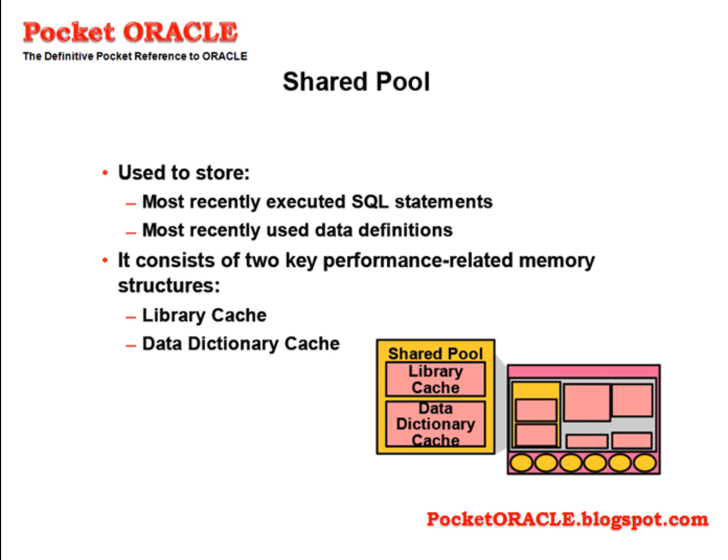The shared pool is further subdivided into a number of other structures: the library cache and the data dictionary cache. The library cache is a memory area for storing recently executed code in its parsed form. Parsing is the conversion of code written by programmers into something executable, and it is a slow process that Oracle does on demand. By caching parsed code in the shared pool, it can be reused without reparsing, and performance can be greatly improved.